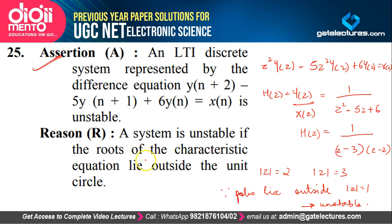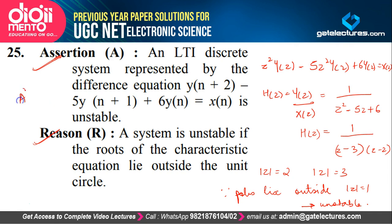The reason states: a system is unstable if the roots of the characteristic equation lie outside the unit circle — which is true. Since we determined the system is unstable because its poles lie outside the unit circle, this reason directly explains the assertion. Both statements are true and the reason correctly explains the assertion — the answer is option A.